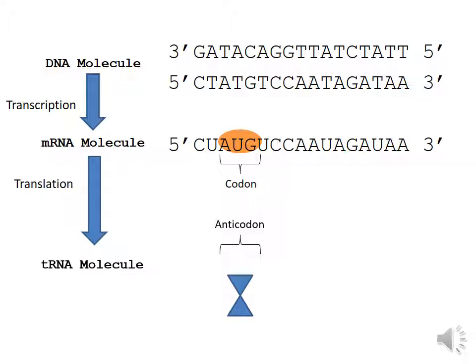The anticodon is going to be complementary to our codon. So in this case, if our codon is AUG, the start codon, our anticodon on the tRNA is going to be UAC. Remember, we're making RNA, so we're still going to have uracil, and then A's and U's pair up, G's and C's will pair up with each other.